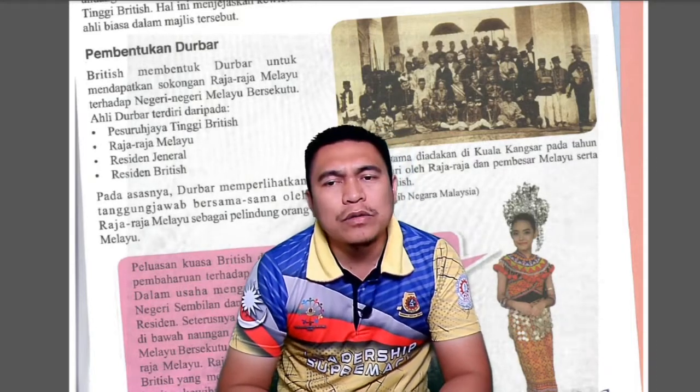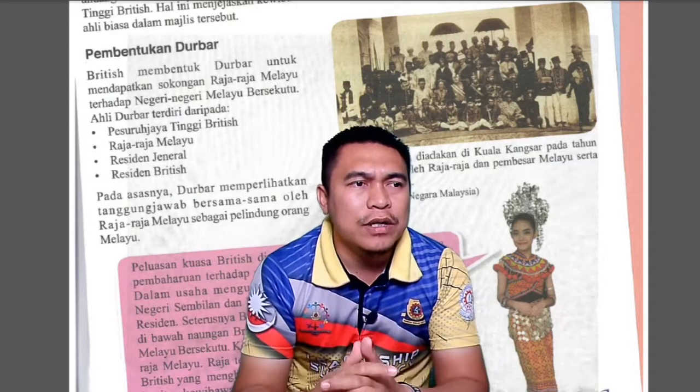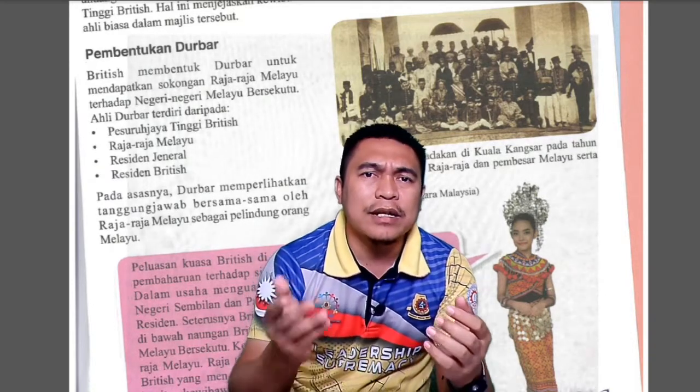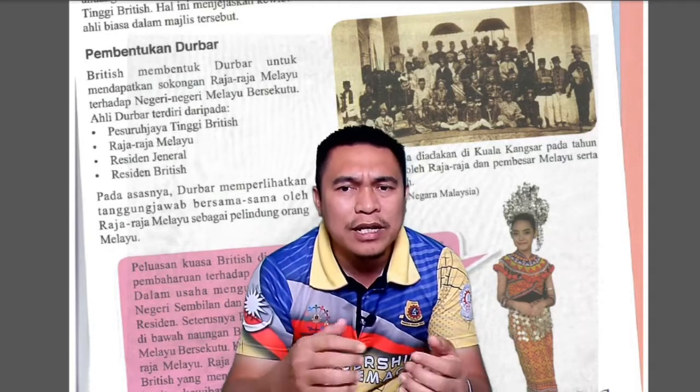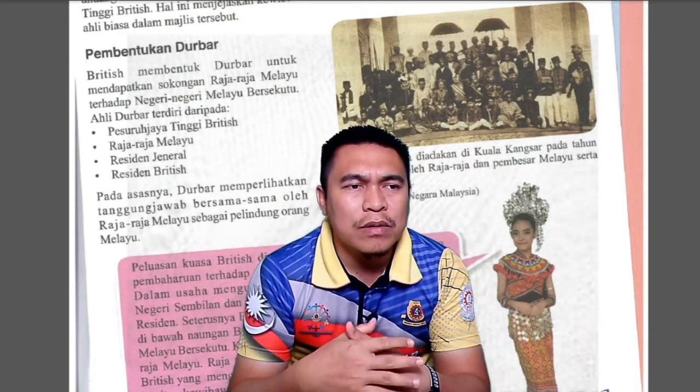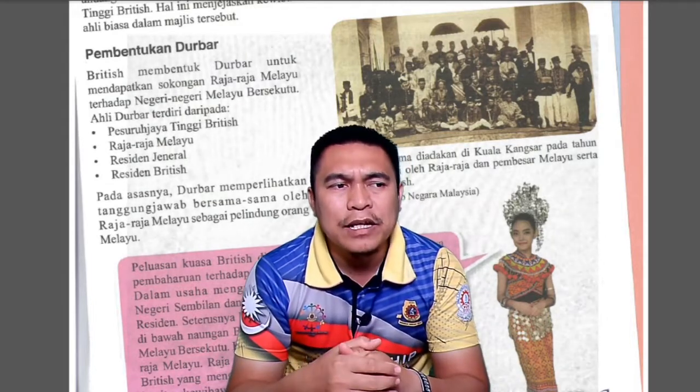Apabila terbentuknya Majlis Mesyuarat Persekutuan, akhirnya dibentuk juga Durbar. British membentuk Durbar ini adalah untuk mendapatkan sokongan Raja-Raja Melayu terhadap negeri-negeri Melayu bersekutu. Sebab dengan pembentukan negeri-negeri Melayu bersekutu ini, kuasa Raja-Raja Melayu yang sebelum ini sudah kurang disebabkan oleh adanya Residen, telah diambil alih oleh satu kuasa yang lebih besar iaitu Residen General. Jadi tujuannya adalah untuk mendapatkan sokongan daripada Raja-Raja Melayu. Ahli-ahli Durbar ini terdiri daripada Pesuruh Jaya Tinggi British, Raja-Raja Melayu, Residen General dan juga Residen British. Asas penubuhan Durbar ini adalah untuk memperlihatkan tanggungjawab bersama oleh Raja Melayu sebagai pelindung orang Melayu itu sendiri.